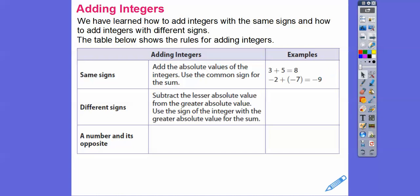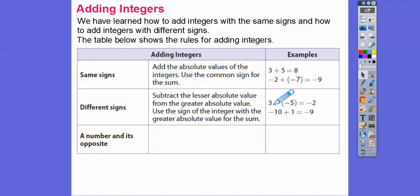If they have different signs, we subtract the lesser absolute value from the greater absolute value, and then use the sign of the integer with the greater absolute value. For example, negative 3 plus 5: absolute value of 3 is 3, absolute value of 5 is 5, so 5 minus 3 is 2 — and we take the sign of the bigger absolute value, so it's negative 2. For negative 10 plus 1: absolute value of negative 10 is 10, absolute value of 1 is 1, so 10 minus 1 equals 9 — and since the negative term is bigger, it's negative 9.